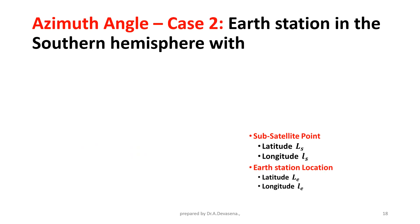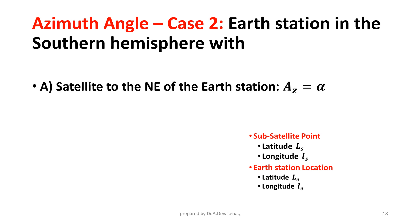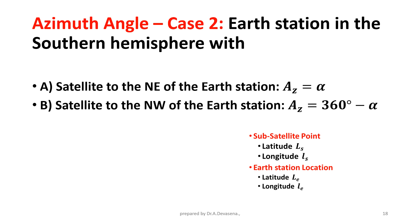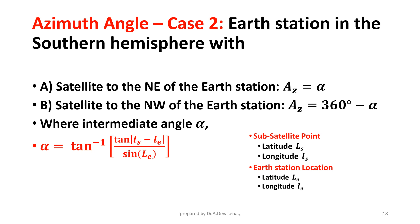Azimuth angle Case 2 — Earth station in the southern hemisphere. Condition A: satellite to the northeast of the earth station: A_Z = α. Satellite to the northwest of the earth station: A_Z = 360° − α, where alpha is the intermediate angle given by α = tan⁻¹(tan|l_s − l_E| / sin(L_E)).